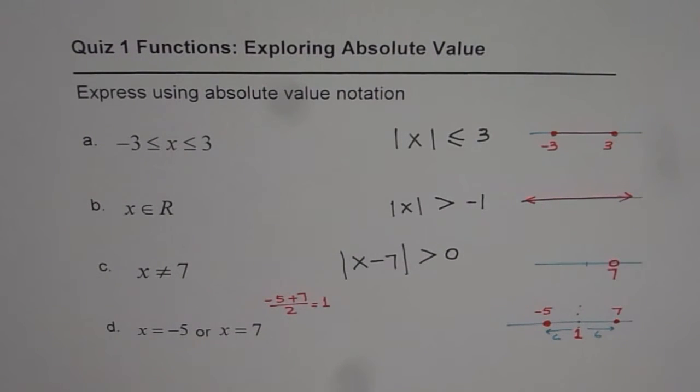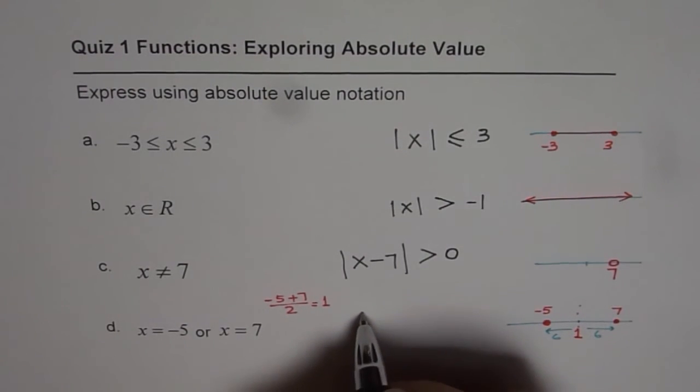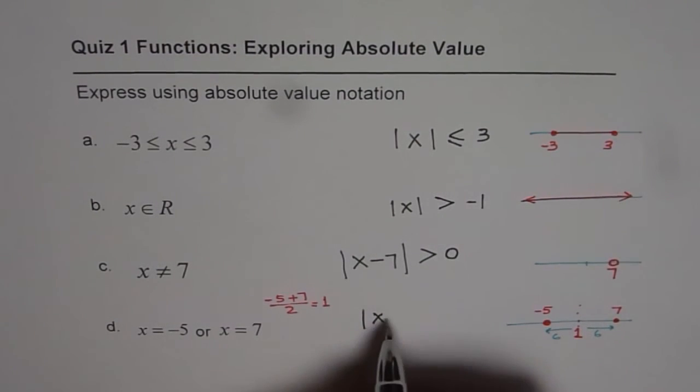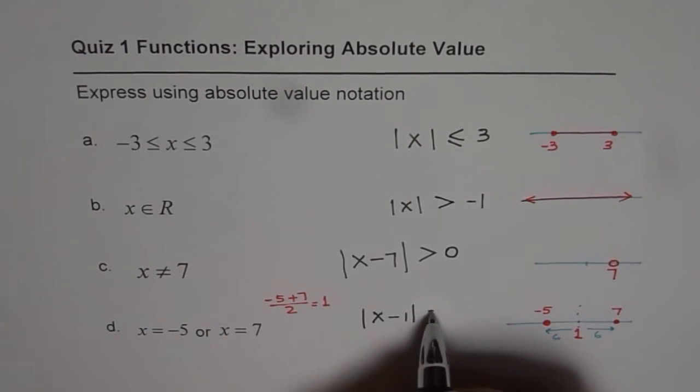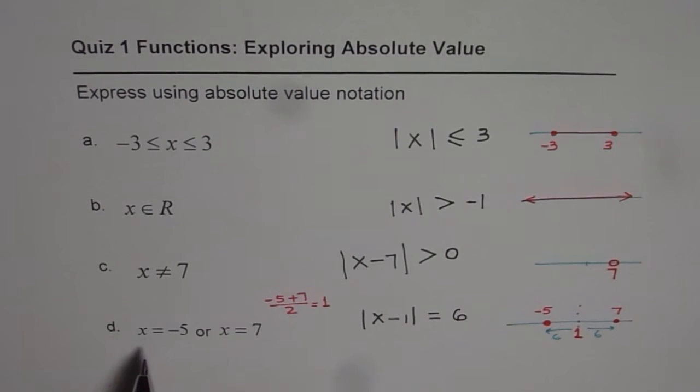And now, you can write down absolute function, and you want them to be equal to. That is to say, if I move my absolute function 1 unit to the right, and I am looking for the value equal to 6, then I get this as a solution.